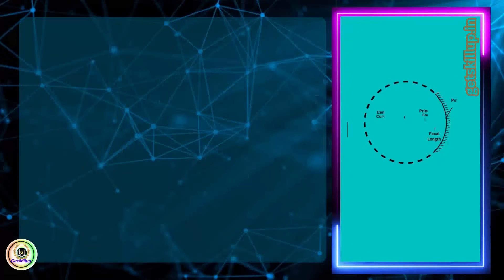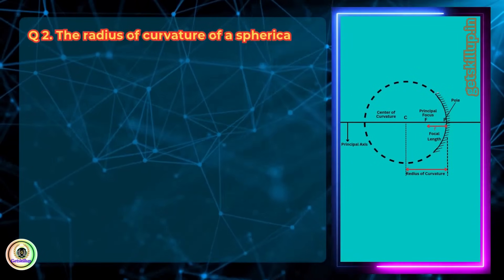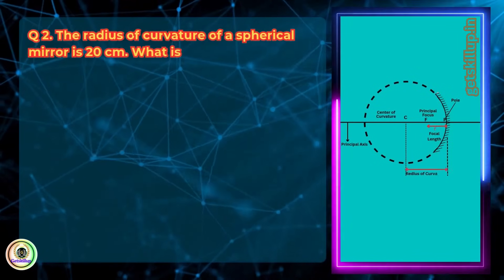Question 2. The radius of curvature of a spherical mirror is 20 cm. What is its focal length?